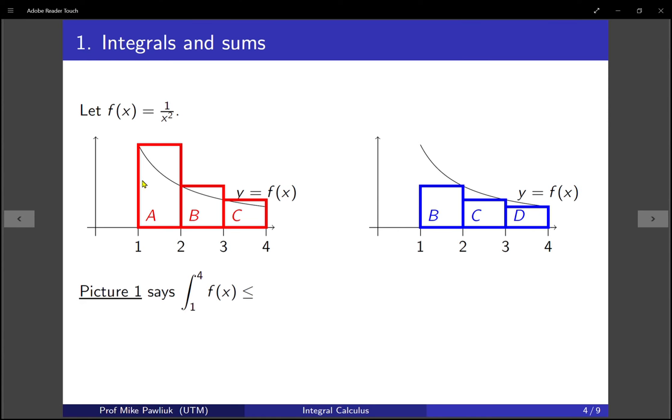And in each case we can figure out what exactly is the height and width of the rectangles. So for the first one, here's the integral under the curve f of x from 1 to 4, and it's less than the sum of these three rectangles. The first rectangle has height f of 1, the second rectangle has height f of 2, the third rectangle has height f of 3, and the widths are all 1. So the first picture actually tells us this inequality that the integral is less than the sum of the first three values.